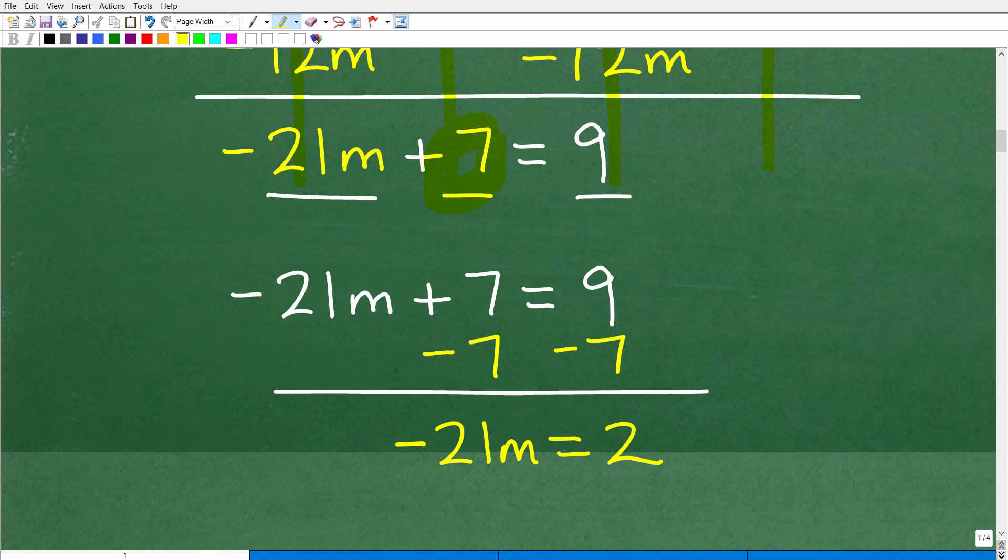All right. So we're getting very close to the answer here. But we can't do anything until we get this number moved over here with this 9. So let's move this 7 to the right-hand side of the equation. Remember, we need to get all the variables to the left, which we do now have all the variable terms to the left. We have negative 21m, but we don't have all the numbers to the right yet. So let's move this 7 over to the right. So how can we do that? I have a positive 7. So if I subtract a 7, that 7 goes away, but I need to do it to both sides of the equation. So again, we're going to add down like so. So negative 21m plus nothing is negative 21m. Positive 7 minus 7 is 0. That goes away. 9 minus 7 is 2. And there we go. We have negative 21m is equal to 2. We are so close to the solution.